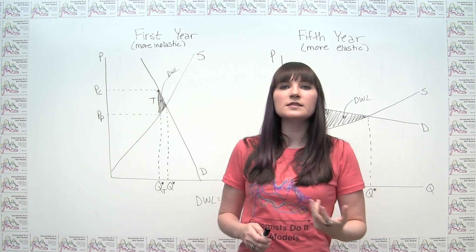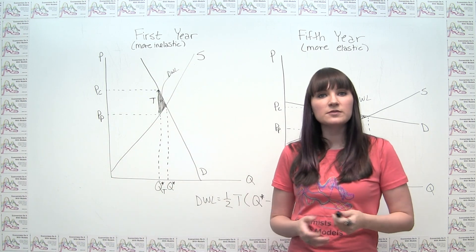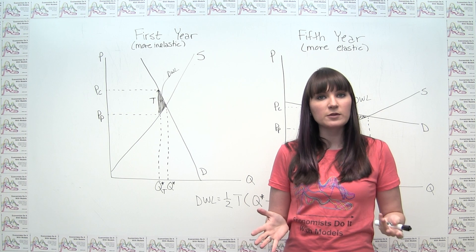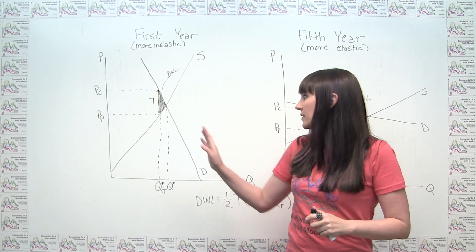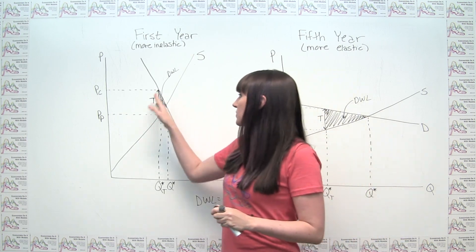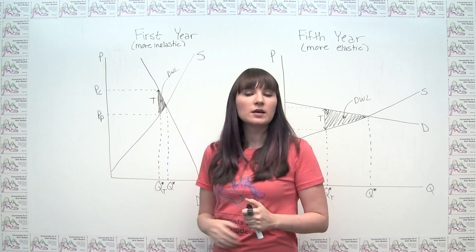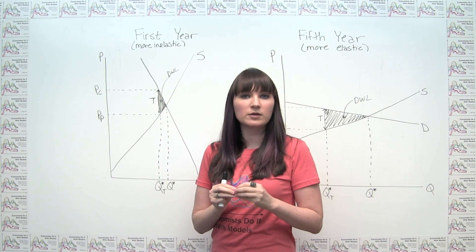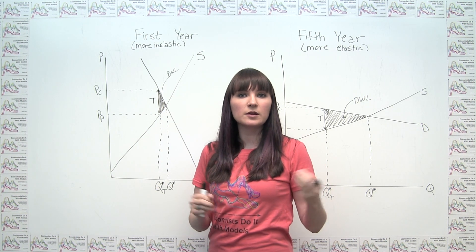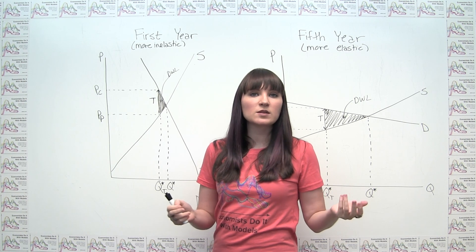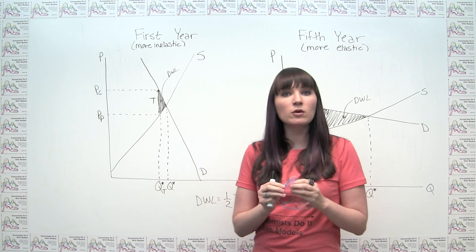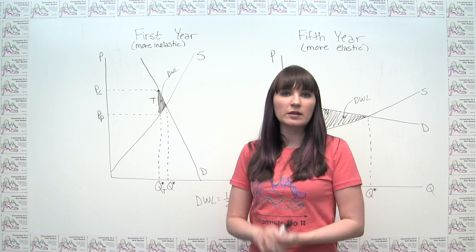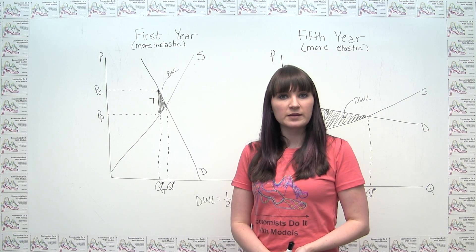This isn't entirely surprising given our intuitive definition of deadweight loss: it happens because there are units that used to be profitable to buy and sell that aren't anymore. So the more of those units there are, the more deadweight loss is created by the tax.